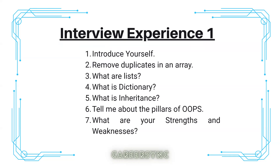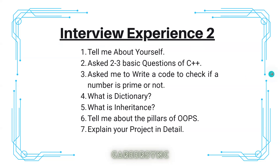The last question for candidate one was what are your strengths and weaknesses. Moving to the second interview candidate, he was asked: tell me about yourself, two or three basic questions of C++, and the interviewer asked him to write code to check if a number is prime or not. The next questions were dictionary, inheritance, and the same repeated question — tell me about the pillars of OOPs — and finally, explain your project in detail.